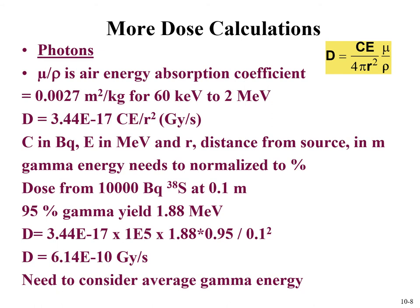We can use a different equation for calculating dose from photons. It contains an air absorption coefficient, mu divided by rho, which describes absorption of photons by air and is generally consistent from 60 keV to 2 MeV. Rearranging into grays per second, we get D = 3.44 × 10⁻¹⁷ times C in becquerels times E in MeV, divided by R squared, where R is distance in meters.